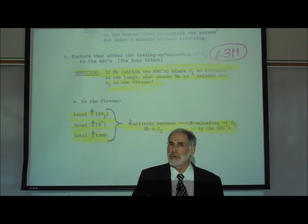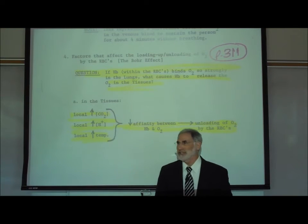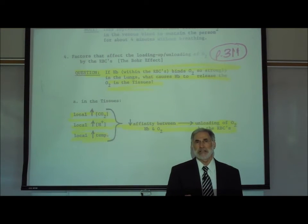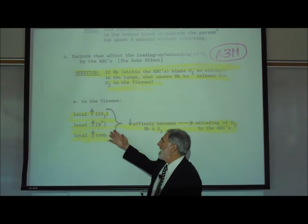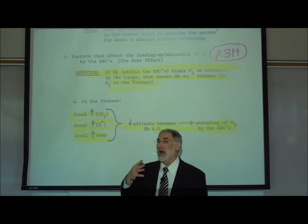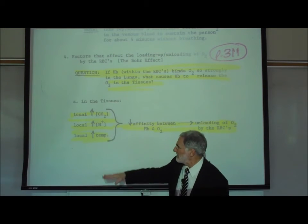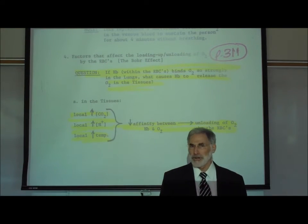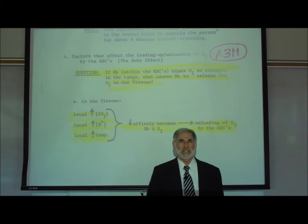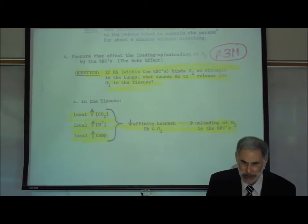All three of these factors tend to occur in any metabolically active tissue, such as muscles that are actively exercising and using up oxygen. As cellular respiration increases, the muscle gives off CO2, which reacts with water to form carbonic acid, increasing acidity. The muscle may also form lactic acid, further increasing acidity. The increased rate of cellular respiration also gives off heat. So all three factors occur in a very active tissue, causing hemoglobin to let go of oxygen and make it available.